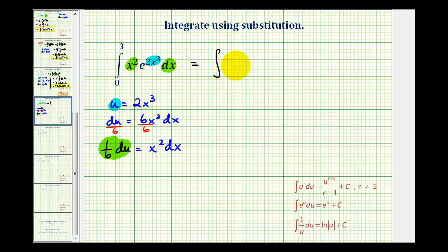We'd have e to the u. And then again, x squared dx is equal to one sixth du.